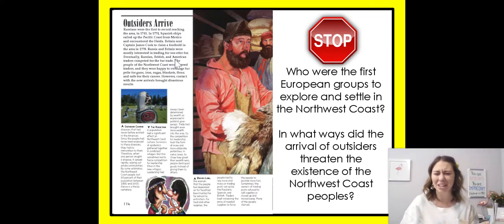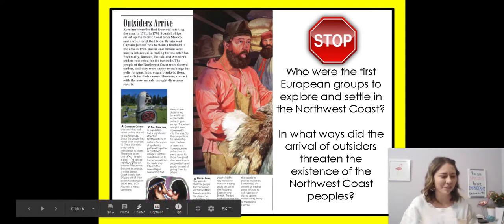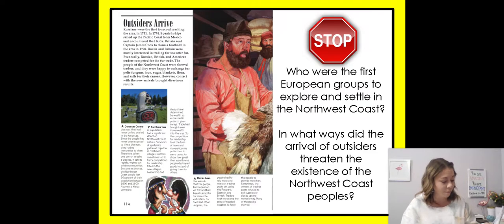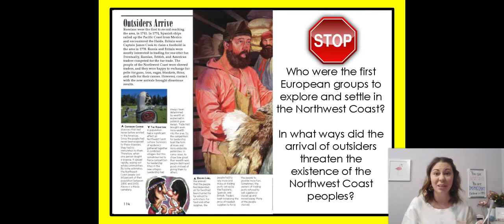This caption says: 'Outsiders carried diseases that had never before existed in the Americas. Since the people had never been exposed to these diseases, they had no immunities to them. Therefore, when one person caught a disease, it spread rapidly, wiping out whole communities. By some estimates, the Northwest Coast people lost 90% of their population between 1800 and 1900.' Above is a Haida cemetery. So they lost 90% of their population — that means like nine out of ten people died in that hundred years.